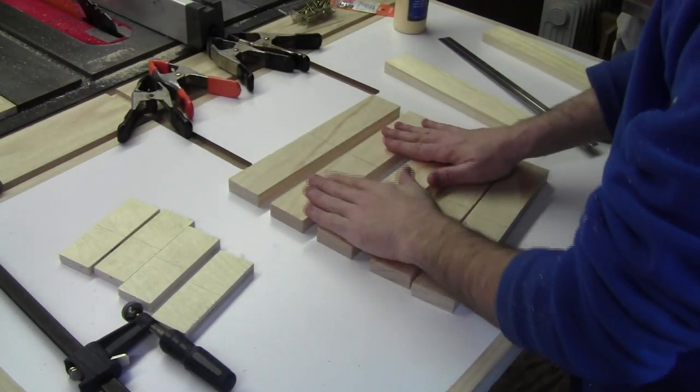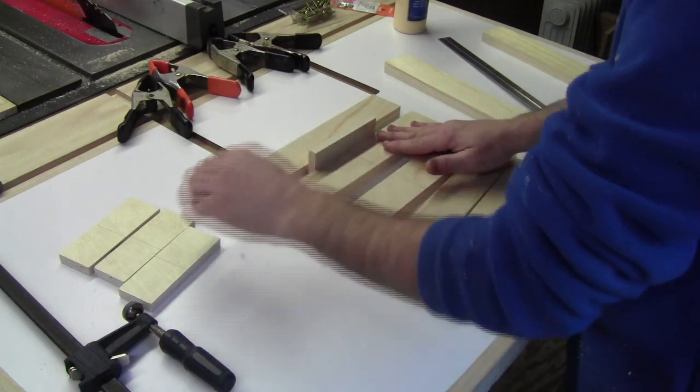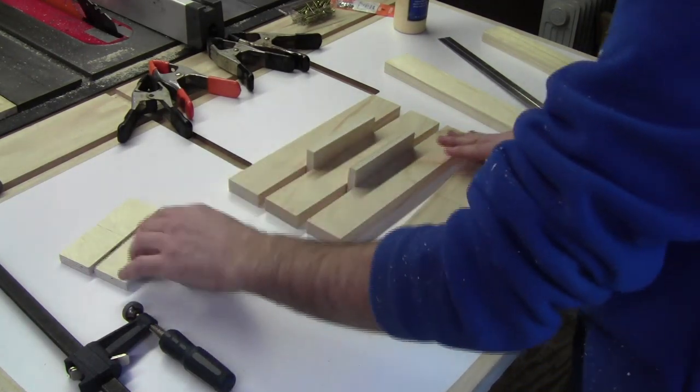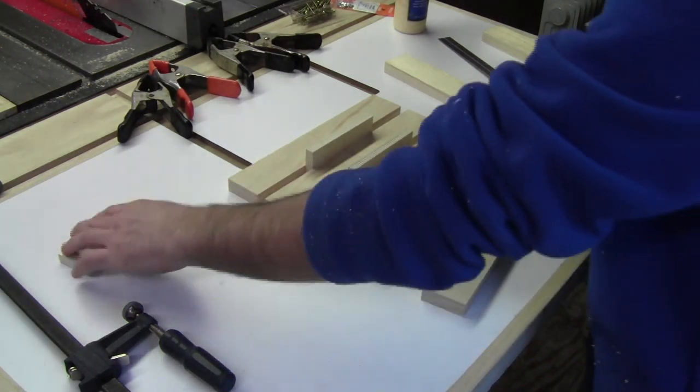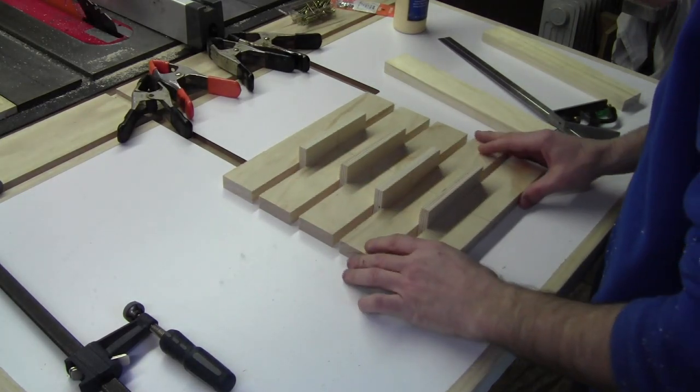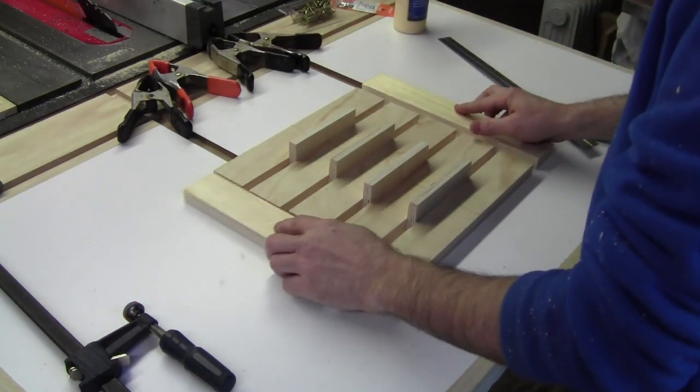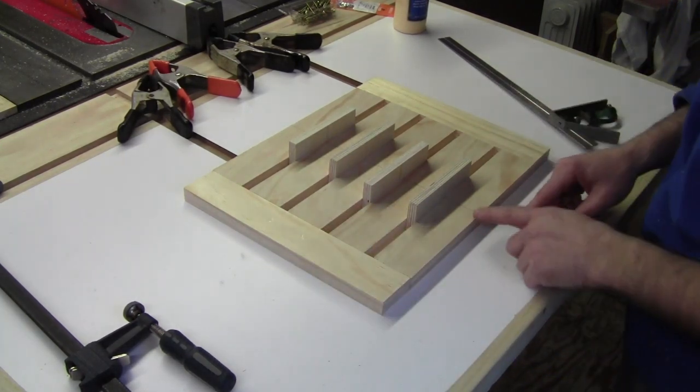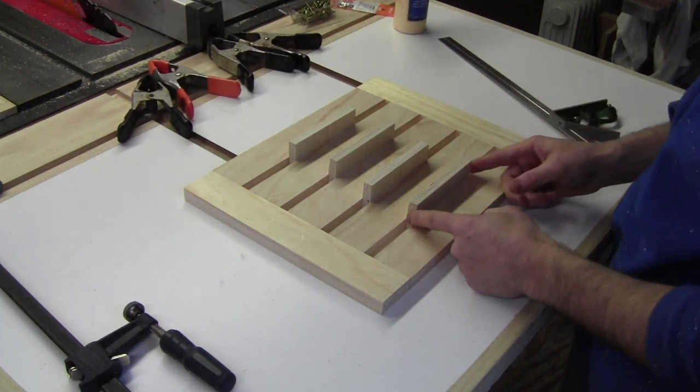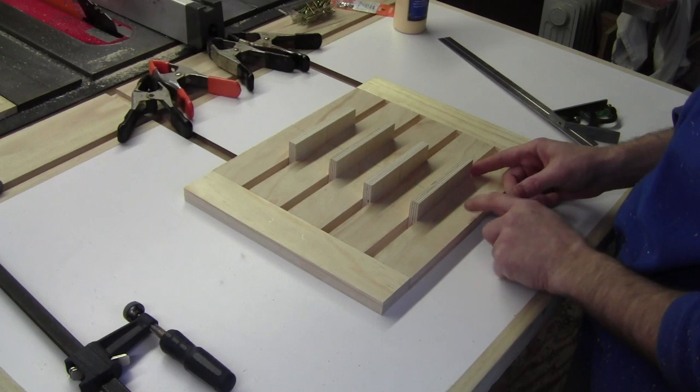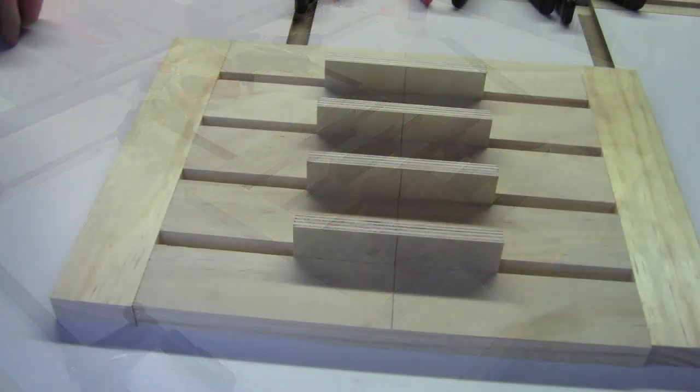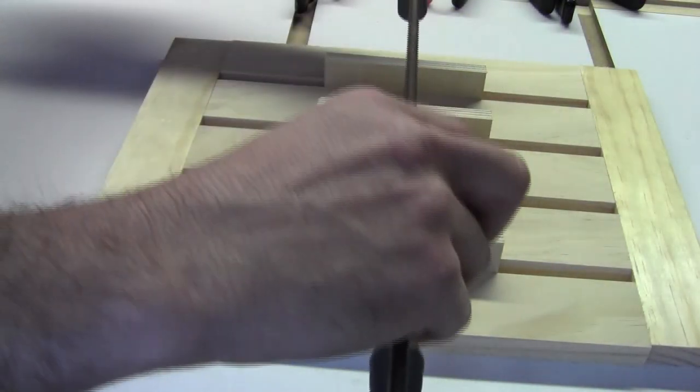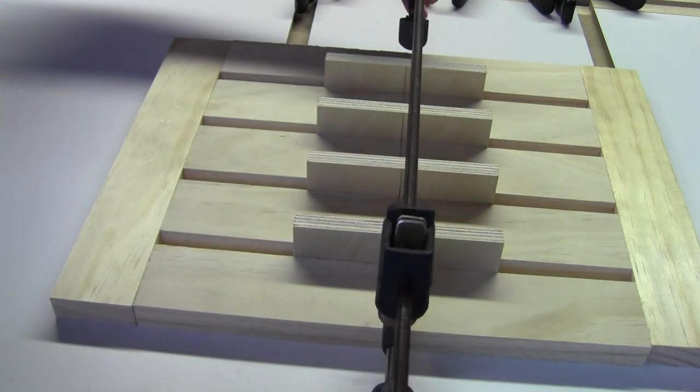From there you want to take your half inch spacer blocks and put it between your five pieces. Go ahead and use the other two pieces that are left over to kind of get everything in line. And then line up your center marks on your spacers and on your actual pieces. Once everything is in line, go ahead and take a clamp to hold everything together.